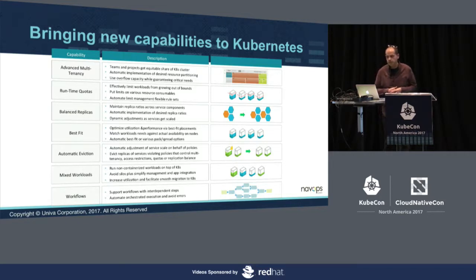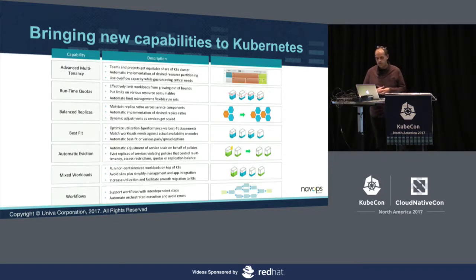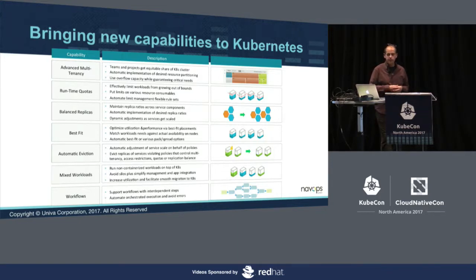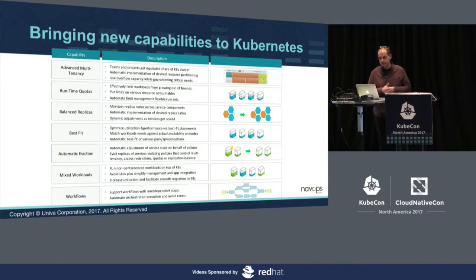Regarding the capabilities that we bring to Kubernetes — I've talked about advanced multi-tenancy and best-fit scheduling. Some more things we do include automatic eviction: if some departments don't get their fair share of resources and others get too much, we will automatically evict replicas to get the right balance.